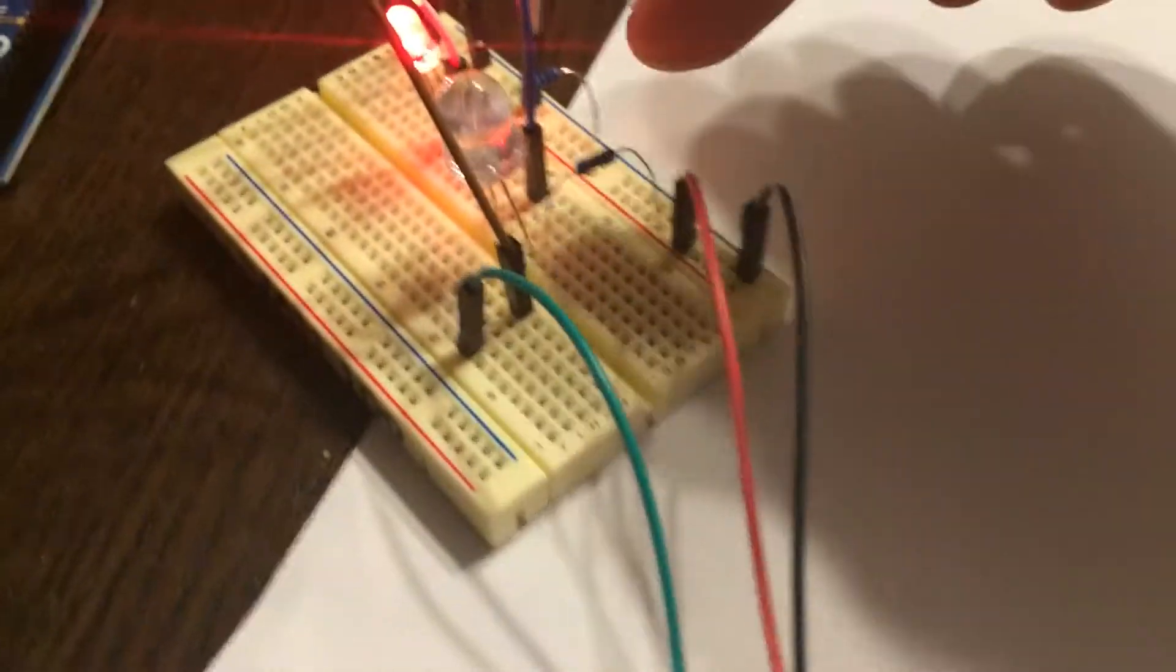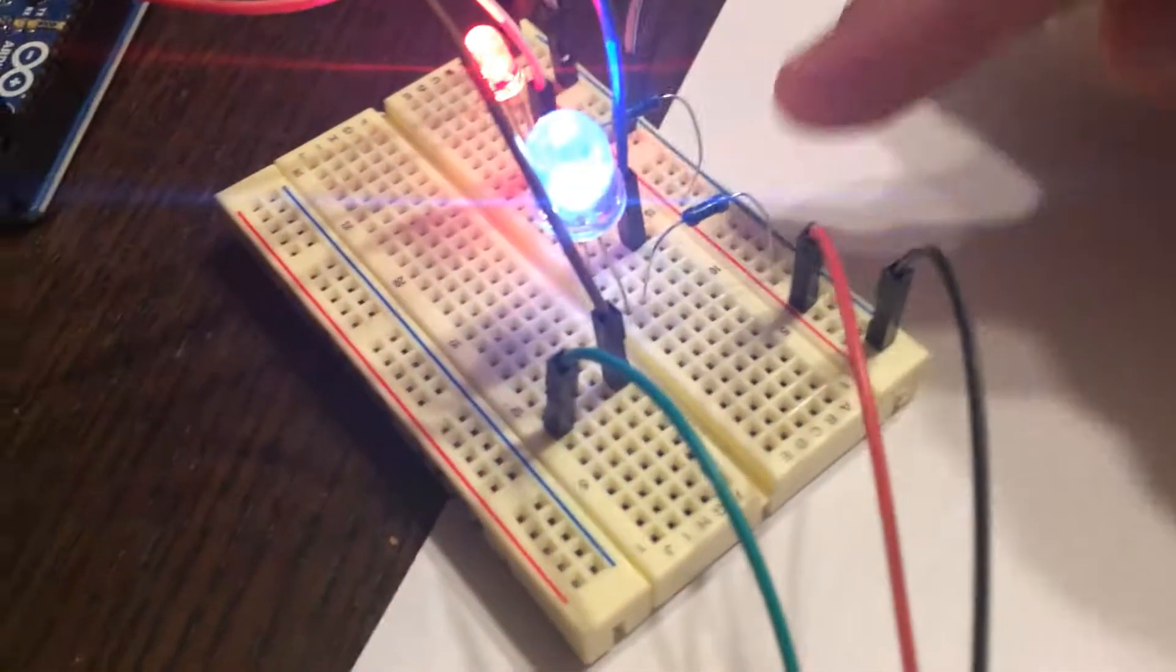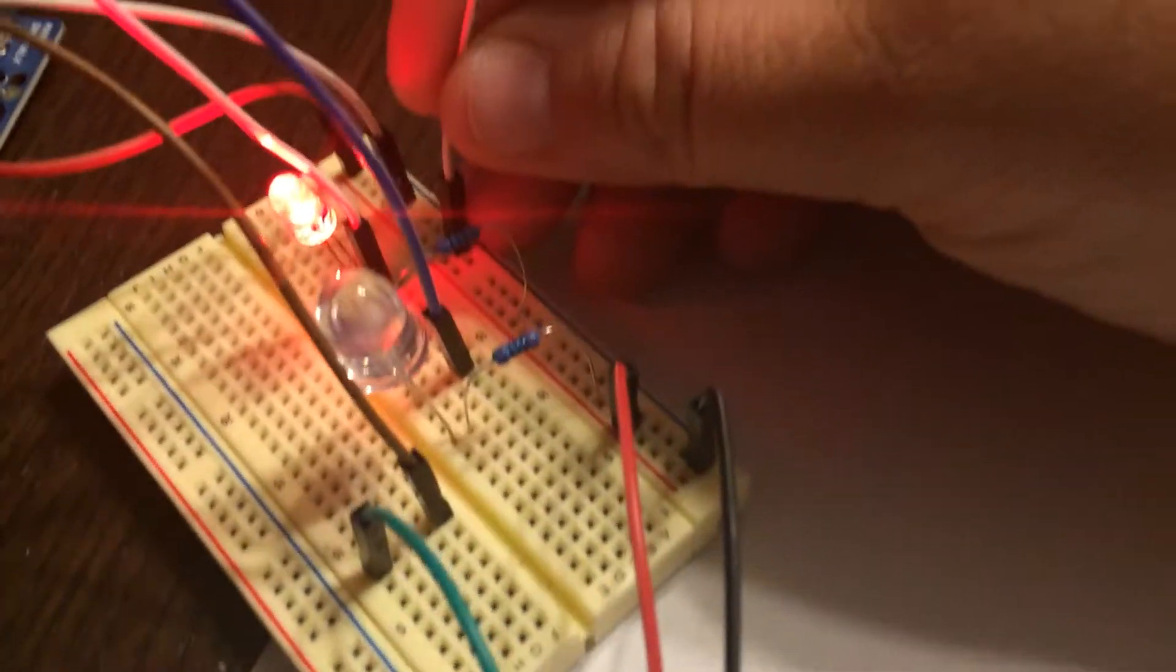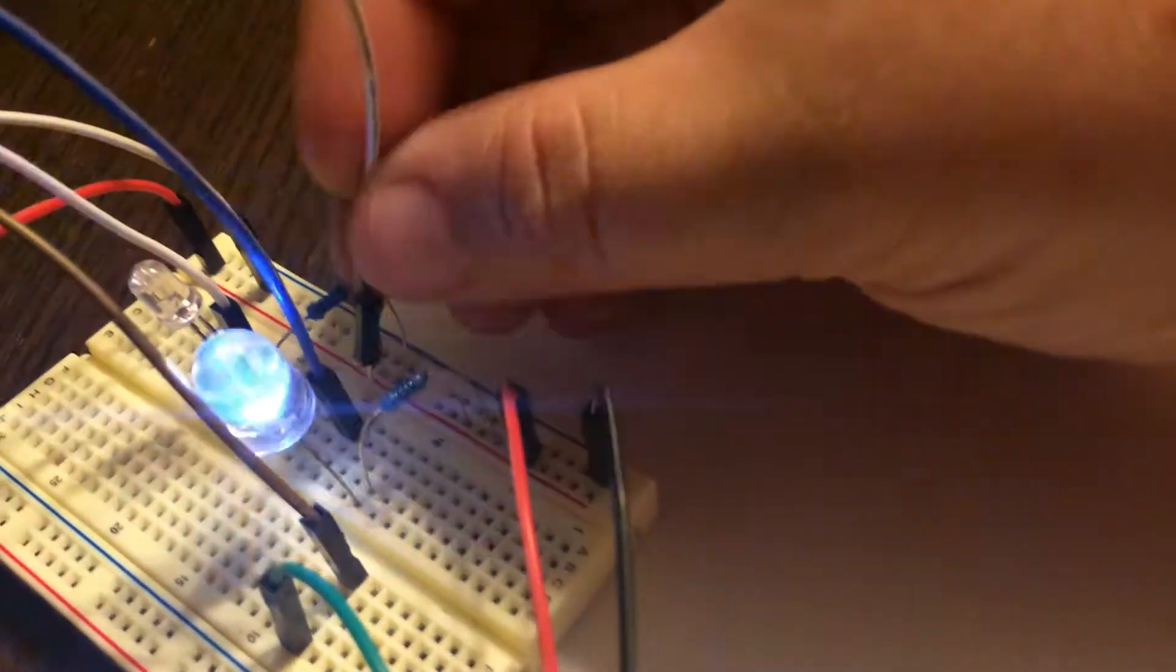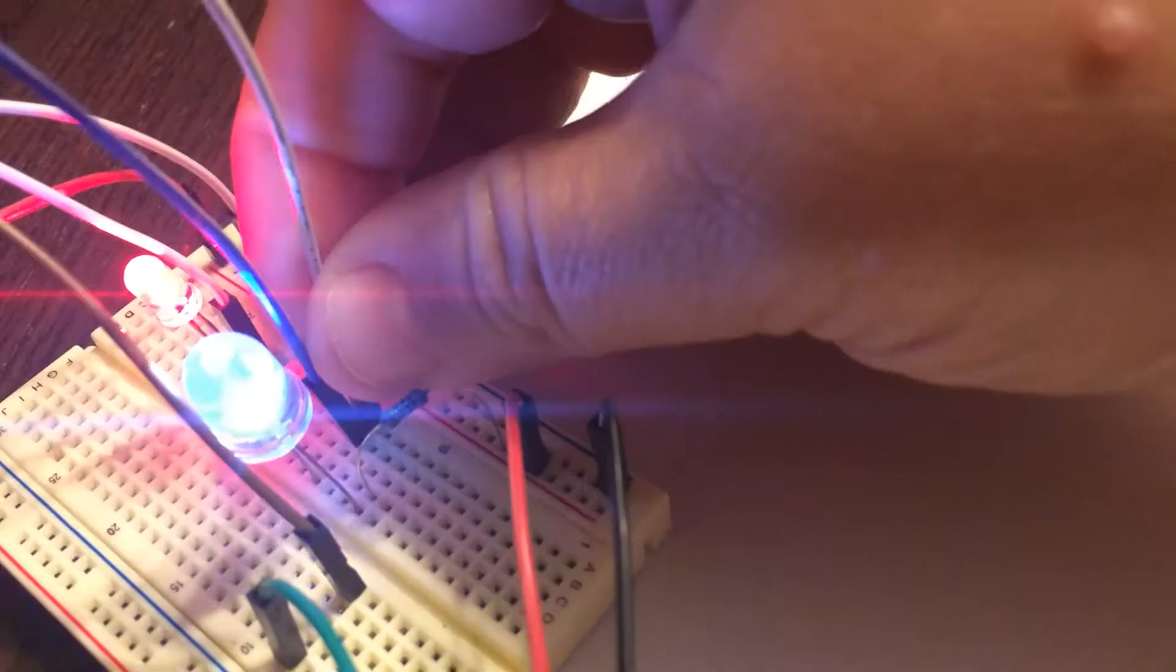So it goes from pin two to the breadboard. And I'm going to move this connection on the jump cable from power, so now it's unplugged, over to pin two.